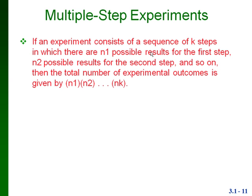So if we had N1 possible results for the first step, N2 possible results for the second step, and so on, then our total number of outcomes is going to be N1 times N2 and so on, including each different step.